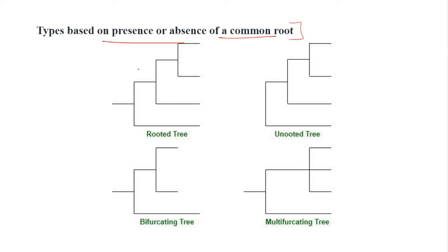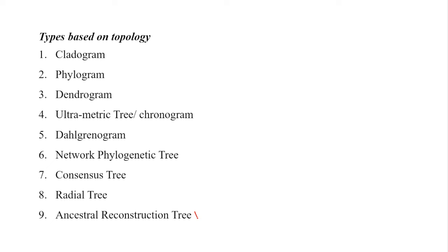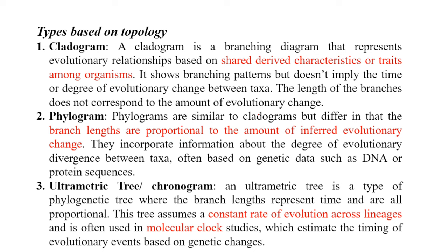There is one more category based on topology — that means based on the situation. One is called a cladogram, another is a phylogram, the third is a dendrogram, the fourth is a chronogram or ultrametric tree, the fifth is a Dalrymple-ogram, the sixth is a network phylogenetic tree, the seventh is a consensus tree, the eighth is a radial tree, and the ninth is an ancestral reconstruction tree.